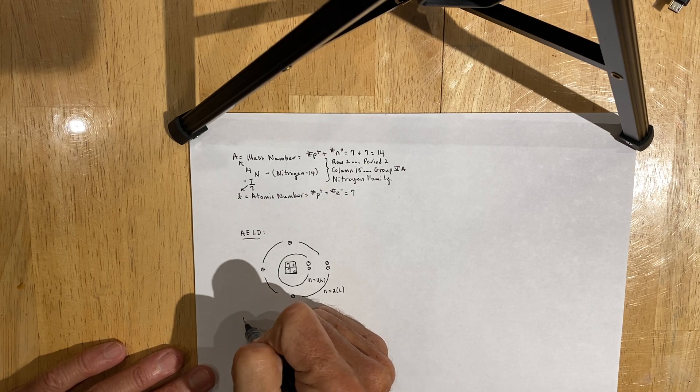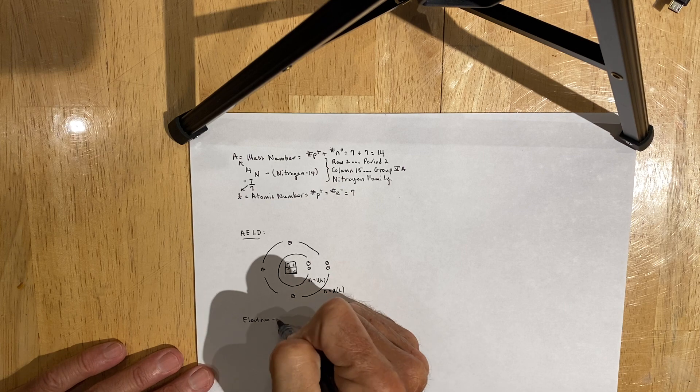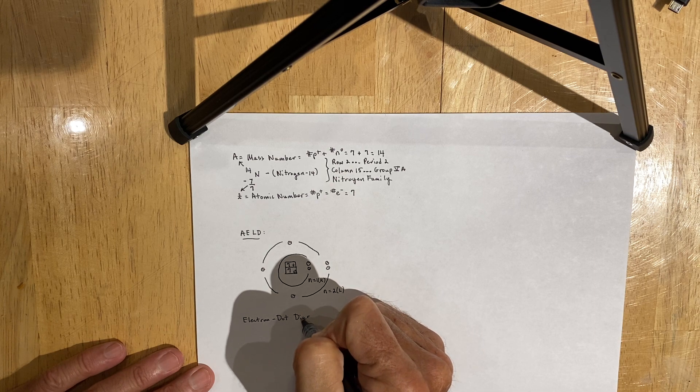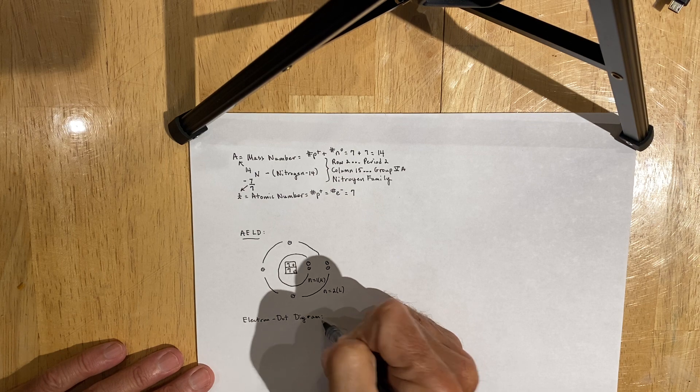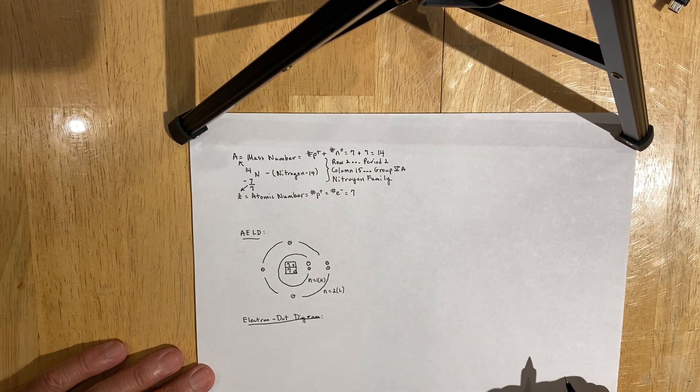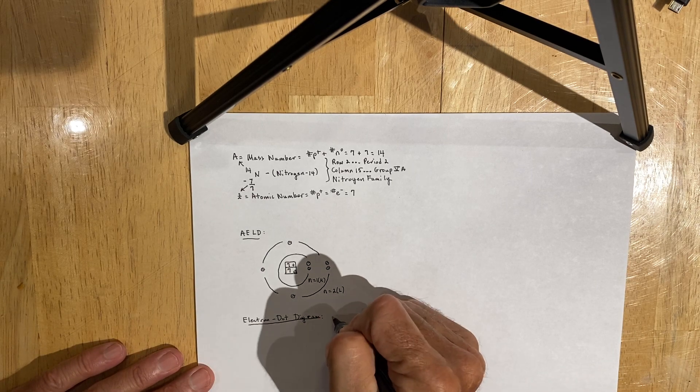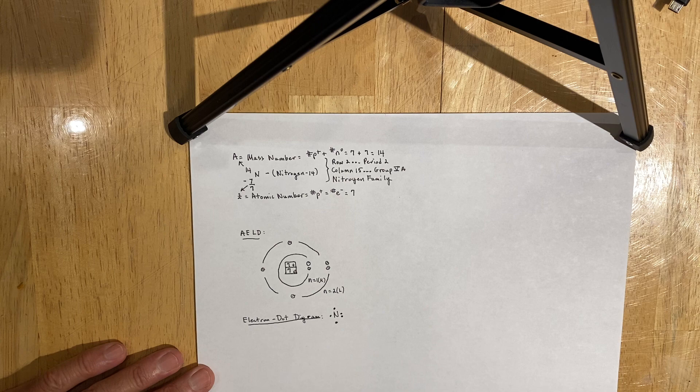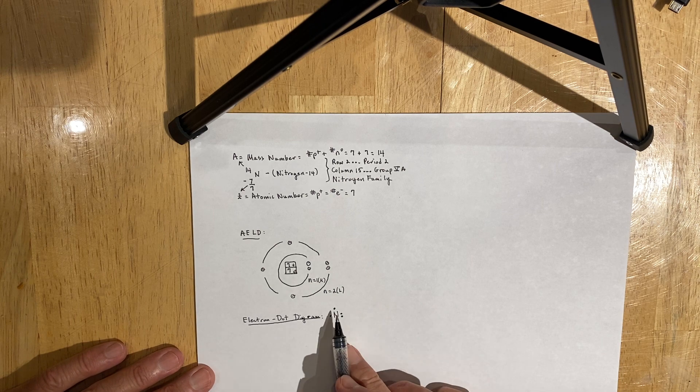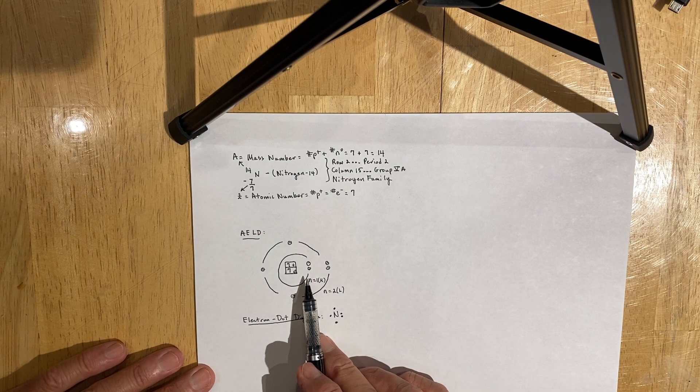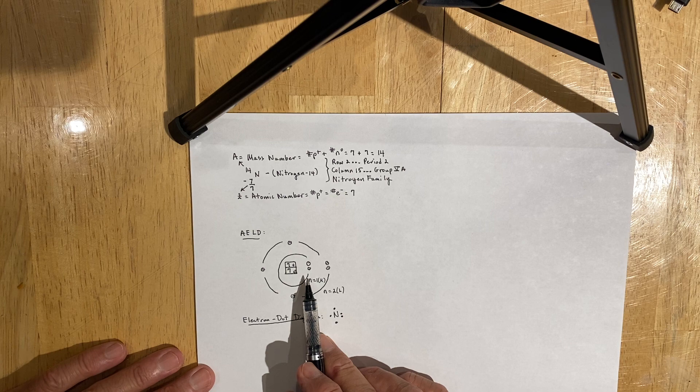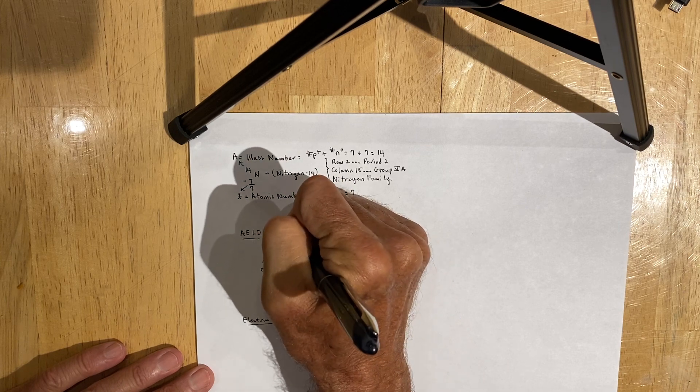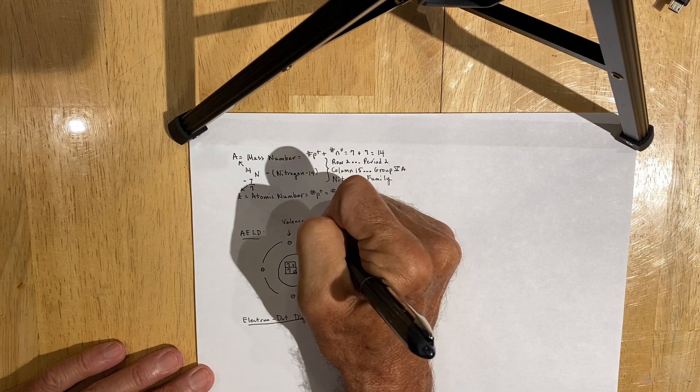For each element, I want you to draw the electron dot diagram. You include the symbol as well as the number of valence electrons. Okay? So those are your five valence electrons for nitrogen. You don't include the first two electrons on the first energy level because those are ground state electrons that are not considered to be valence electrons. So the valence electrons are the electrons on the second energy level in this case.